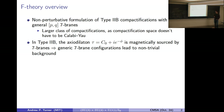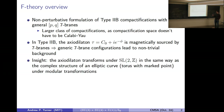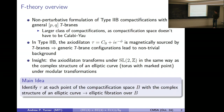The main insight leading to F-theory is that the axio-dilaton transforms under SL(2,Z) in the same way as the complex structure of the torus under modular transformations. So we can identify tau, the axio-dilaton, at each point of the compactification space B with the complex structure of a torus, leading to a genus-one fibration. We require each torus to have a marked point, so we ultimately have an elliptic fibration encoding the variation of the axio-dilaton over spacetime.